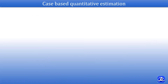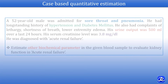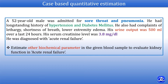As this is a case-based quantitative estimation, let's begin with a clinical case scenario. A 52-year-old male was admitted for sore throat and pneumonia. He had a long-standing history of hypertension and diabetes mellitus. He also had complaints of lethargy, shortness of breath, lower extremity edema. His urine output was 500 ml over the last 24 hours. His serum creatinine level was 3.8 mg per deciliter. He was diagnosed with acute renal failure.